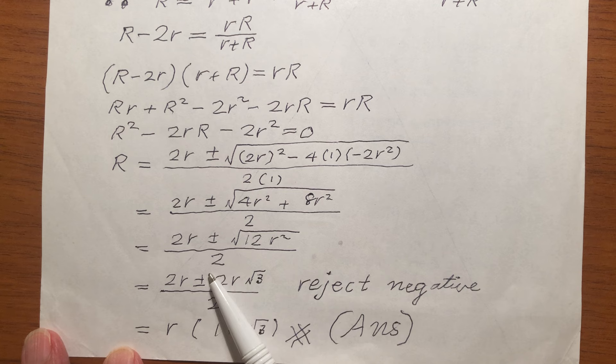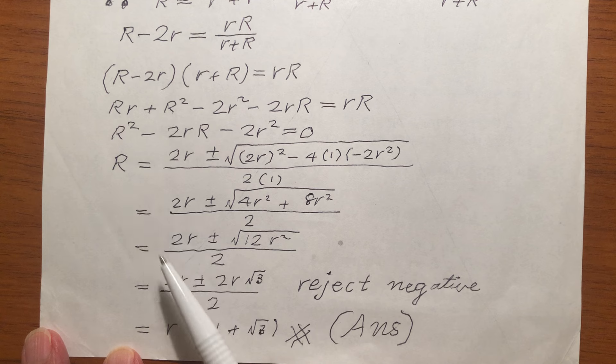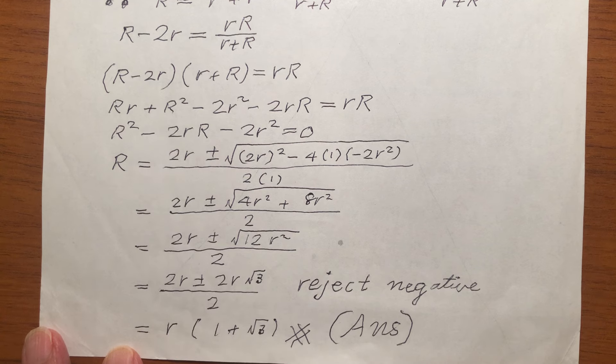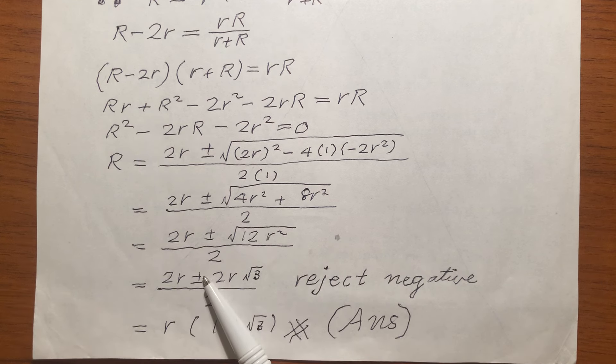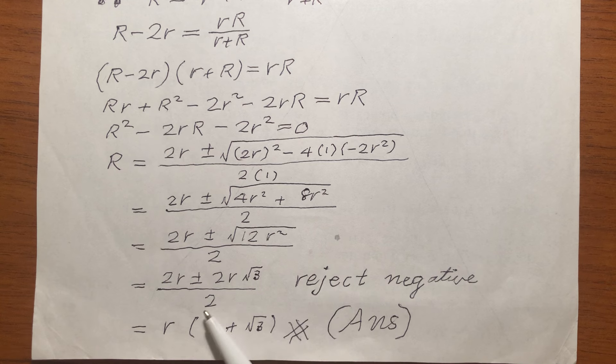I have a plus here, minus here. If I take the minus sign, then the capital R is negative. I cannot have a negative resistance. So, I reject the negative sign, I only take the positive sign. So, if you take the positive sign, this is the result. And this is our answer.